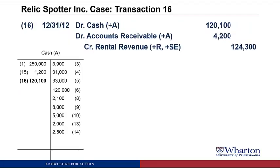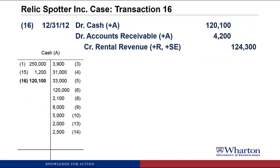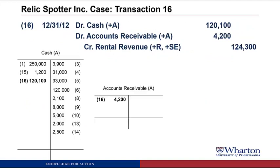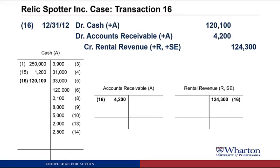To post this one, we add another debit to the cash account, so another increase in cash. We create an accounts receivable T-account with a debit balance, and we create a T-account for rental revenue, which has a credit balance.